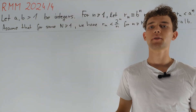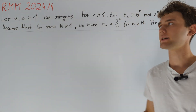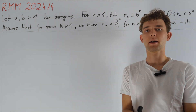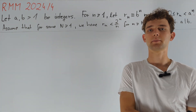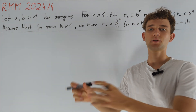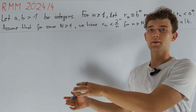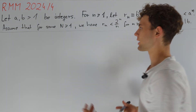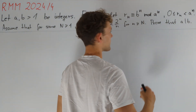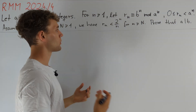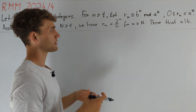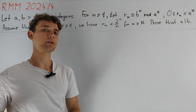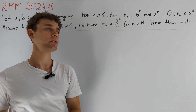If I had to guess the behavior of r_n as n tends to infinity, I would probably say that r_n sometimes takes large values close to a^n and sometimes smaller ones — unless, of course, we are in the trivial case where a divides b. One takeaway from this heuristic is that we want to compare r_n for different values of n.